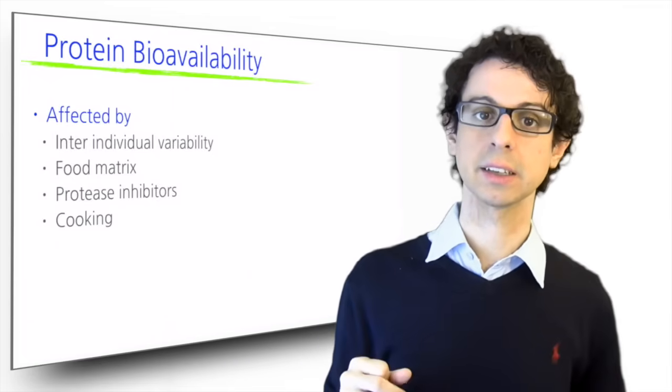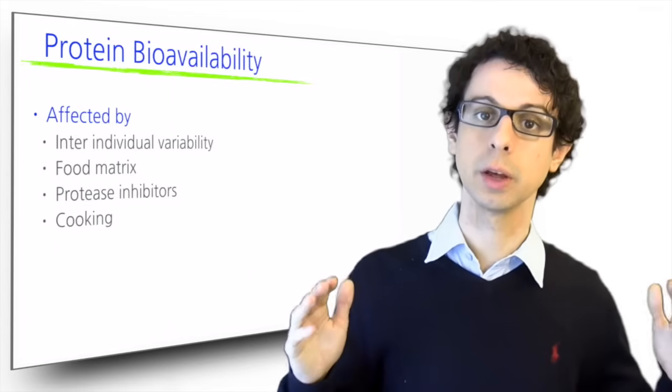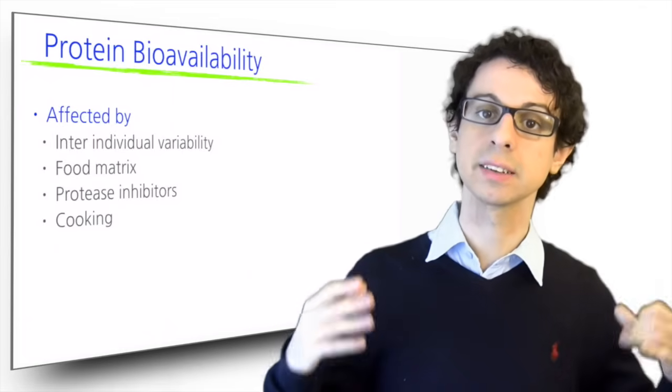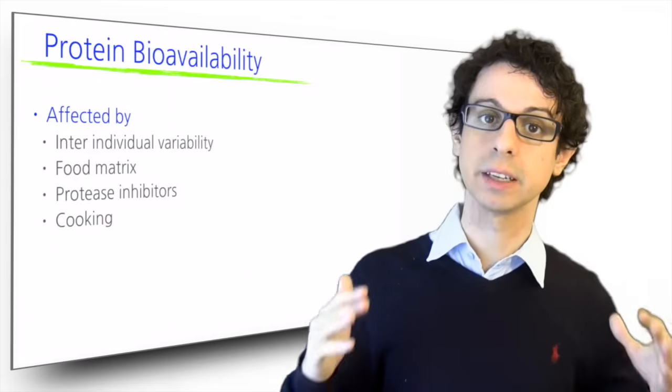Cooking also has an effect. In general, cooking increases protein availability from most food, both animal and vegetables, because it starts denaturation, softens tissues, and may even inactivate inhibitors.